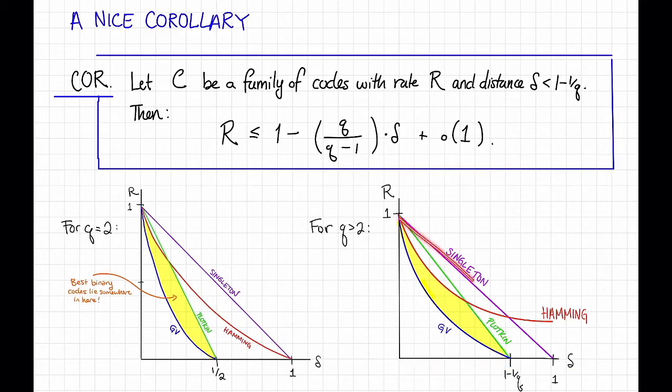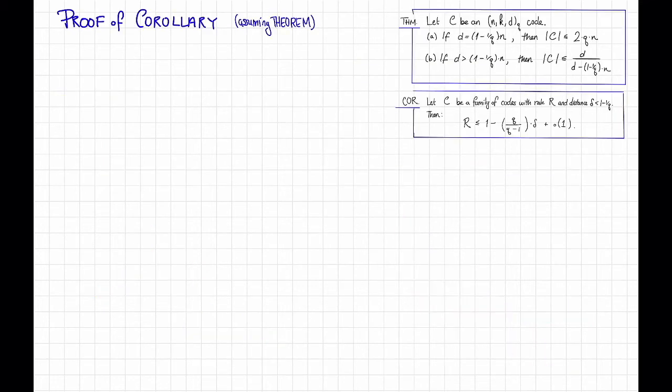So we have the singleton bound and the Plotkin bound. These are just straight lines. The singleton bound doesn't depend on the alphabet size. It's always just this straight line. And the Plotkin bound is going to be a straight line ending at this point, 1 minus 1 over q. Notably, that is also where the GV bound ends up.